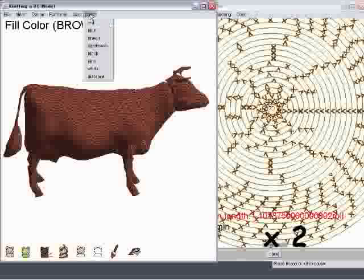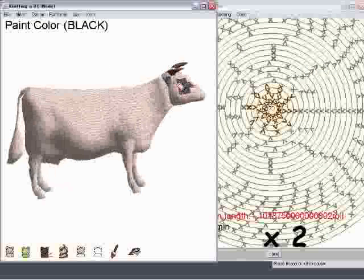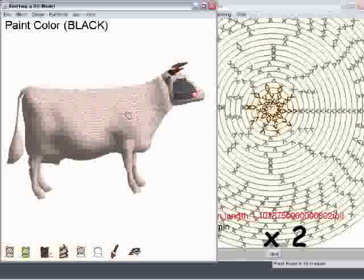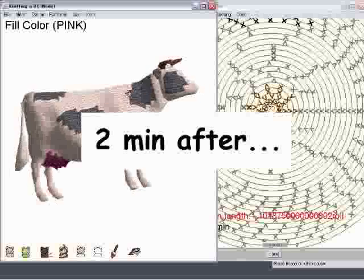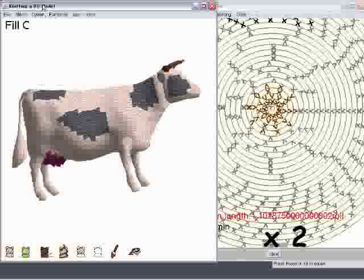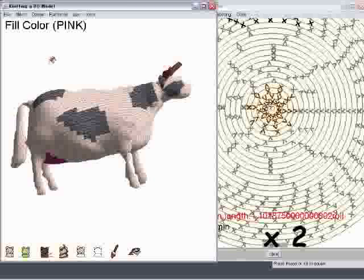The user can color the 3D model using a paint tool in the system. In the actual knitting process, the user can change the color of yarn referring to the knitting pattern. The system also runs a simple physical simulation to predict the shape of the resulting knitted animal.